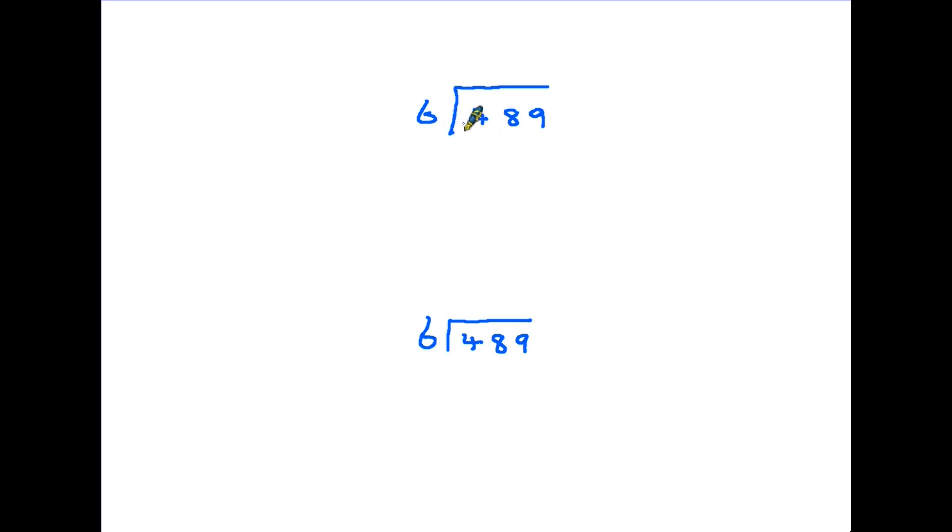Well, there aren't any. You cannot take 6 out of 4, there are no sixes in 4. So we're not using that 4 at all. So because we're not using it, the whole 4 has to go onto the next column. We are therefore then asking how many sixes there are in 48? And the answer: there are 8 sixes in 48, and that's an exact number.